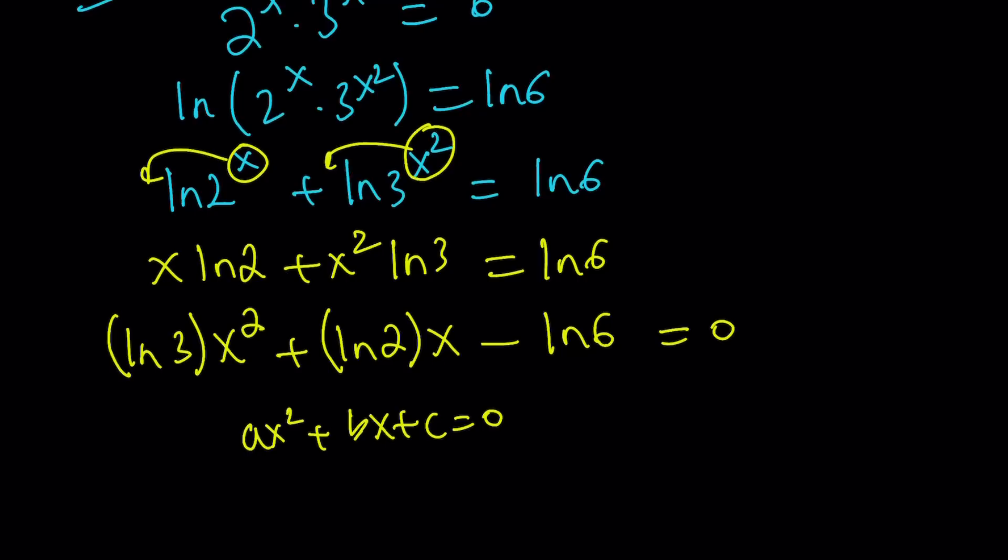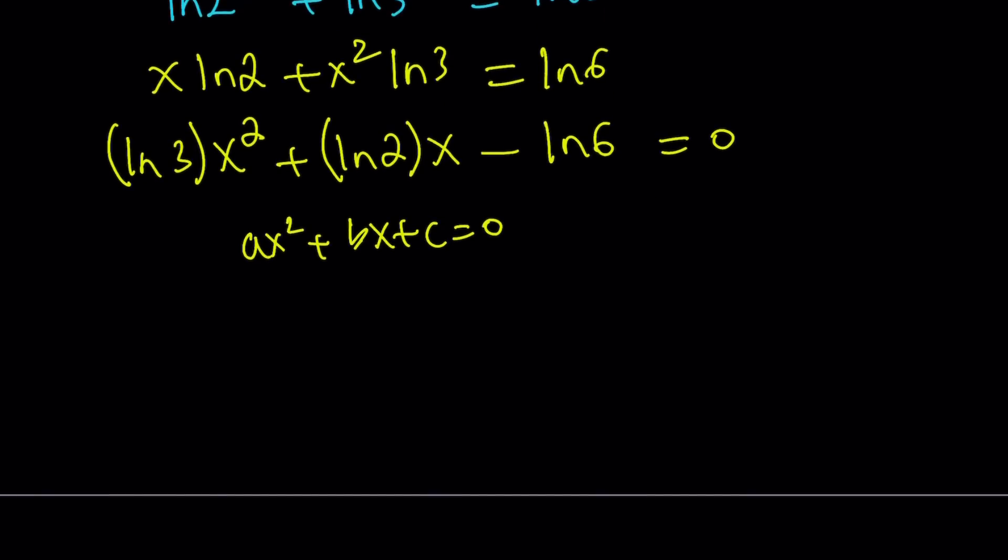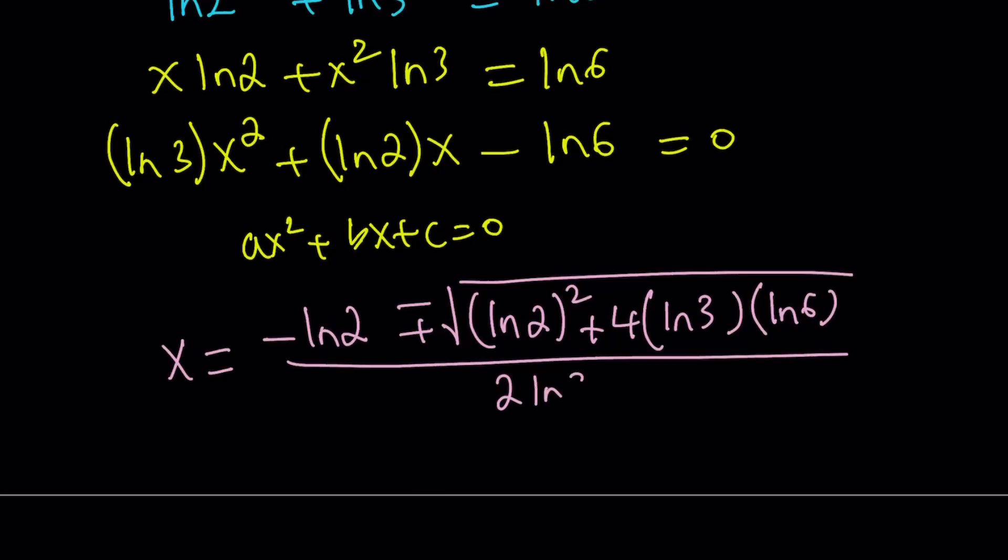Therefore, we can use the quadratic formula. But one thing to keep in mind here. You can just go ahead and use the quadratic formula. Let's go ahead and use it, but I'm going to go back to this and tell you something about it. So x equals negative b plus minus square root of b², which is ln 2 squared, minus 4ac. But c is negative, so that's going to turn into a positive. And all of that is divided by 2 times ln 3.